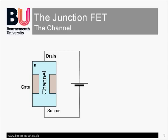JFETs, or Junction Field Effect Transistors, come in P- and N-channel varieties. The channel is simply a block of N-type semiconductor with a source terminal at one end and a drain terminal at the other. Applying a positive voltage to the drain end will attract the free electrons in the channel and they'll flow from the source to the drain, giving a conventional current direction from drain to source. Increasing the voltage on the drain will increase the drain current.